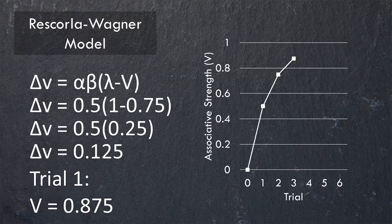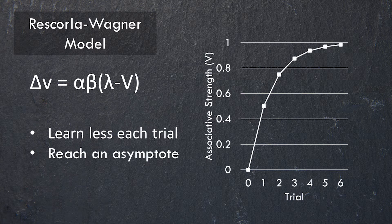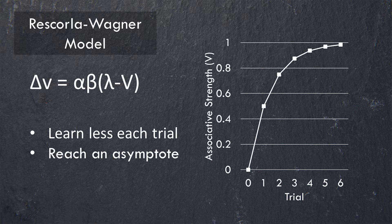Let's go through it one more time. This time it's lambda of 1 minus V of 0.75, which gives 0.25. Multiply by the constants and you get 0.125 change in associative strength on this trial, for a total of 0.875. If we keep doing this, we learn less and less each trial but get closer and closer to 1. If we reach 1, we aren't going to be learning anymore — because 1 minus 1 is 0, multiplied by the constants you get 0 — and so we're not learning anything new. Look at this nice learning curve.